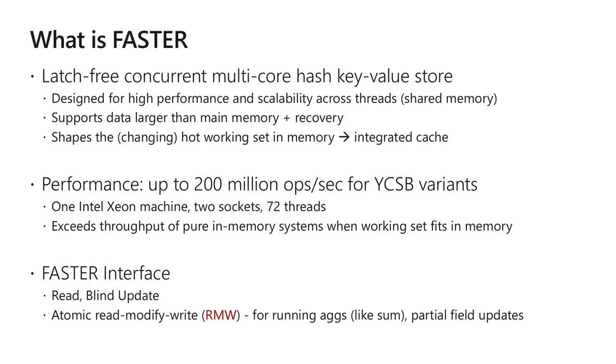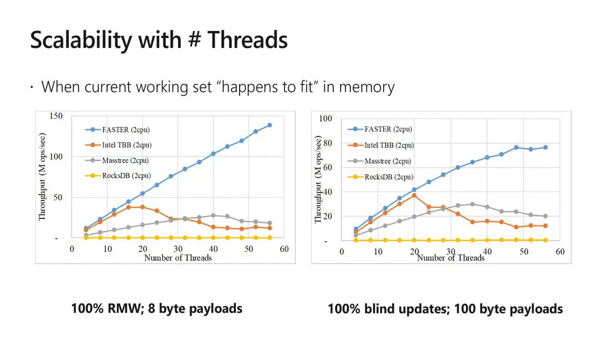For a YCSB workload on a single high-end machine with two sockets, we get around 150 to 200 million operations per second. The interface consists of point reads and blind updates, but also atomic read-modify-write operations — particularly interesting in streaming scenarios where you read a value and make an update, such as incrementing a counter or updating machine learning model parameters. FASTER gets pretty much linear scalability for the YCSB workload and is comparable to pure in-memory data structures such as the Intel TBB HashMap.